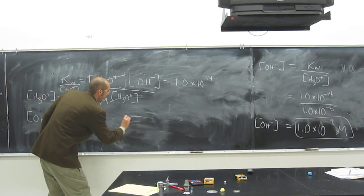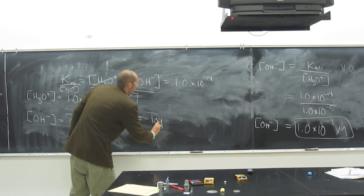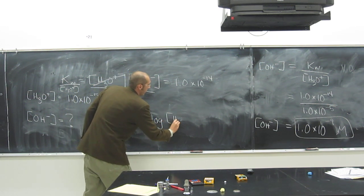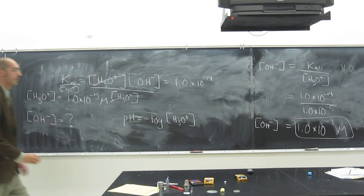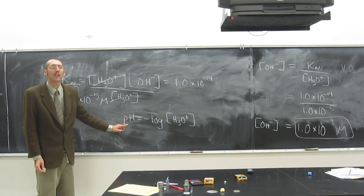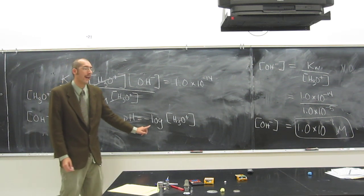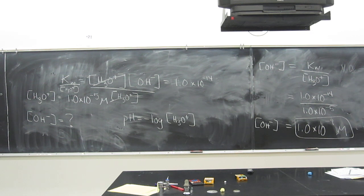So remember, pH equals the negative log of the H3O plus concentration. So when we look at that, this little p here in chemistry always means negative log of. I don't know what that noise was, very interesting to have in a chemistry class.